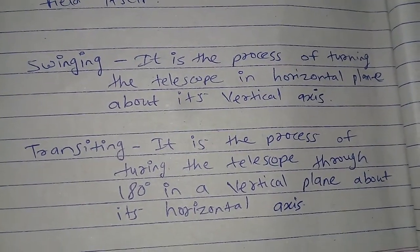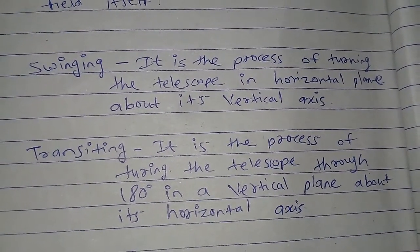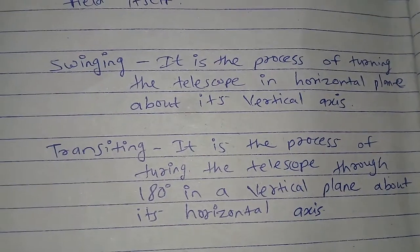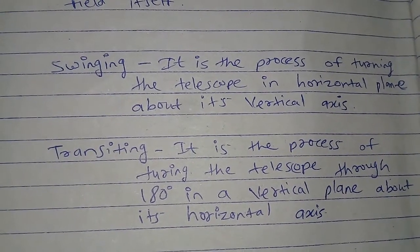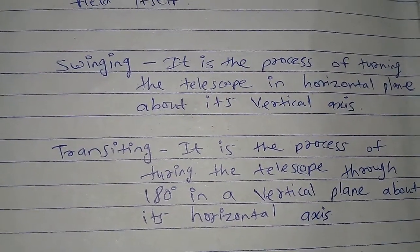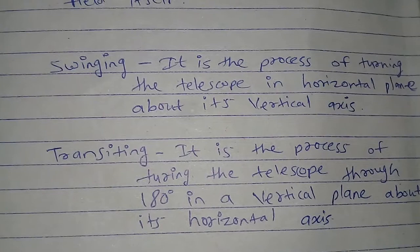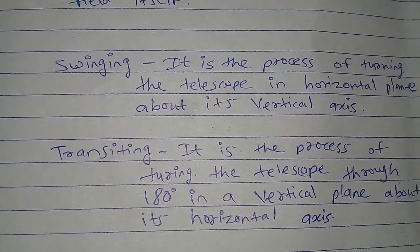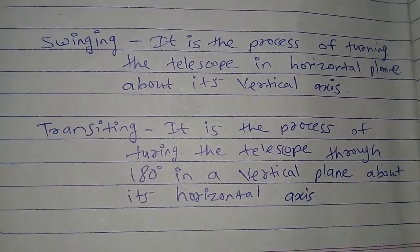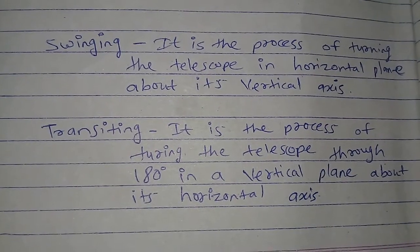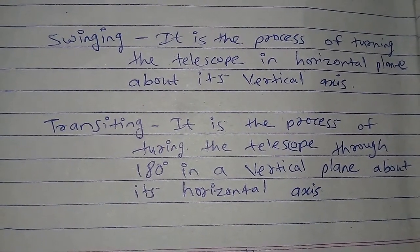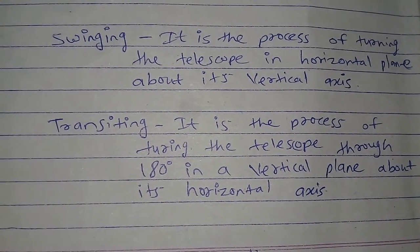Transiting is the process of turning the telescope through 180 degrees in a vertical plane about its horizontal axis.